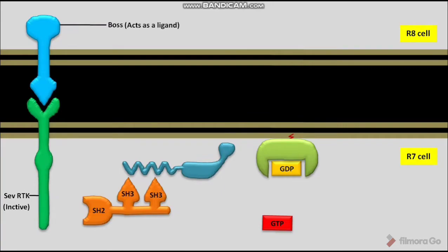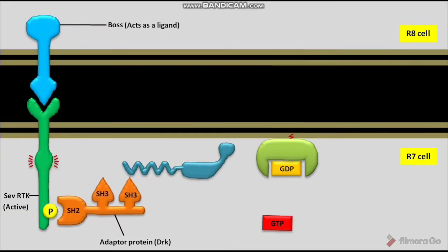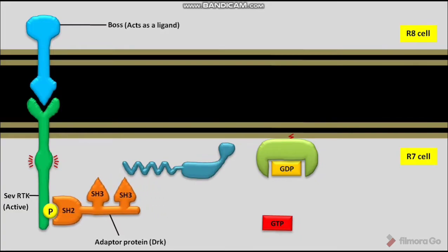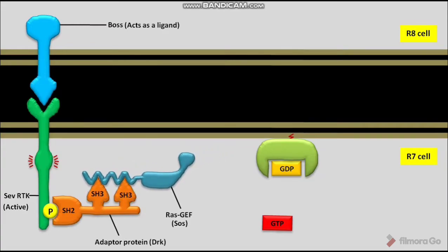The Sev-RTK then phosphorylates itself on tyrosines. Due to this phosphorylation, the Sev-RTK becomes active. The SH2 domain on the adapter protein DRK then binds to a specific phosphorylated tyrosine on the active Sev-RTK. The adapter protein DRK has two SH3 domains. The Ras-GEF, also called SOS, then binds to the two SH3 domains on the adapter protein DRK.